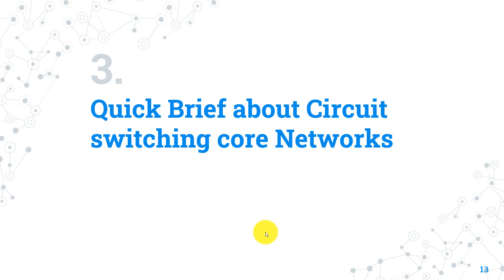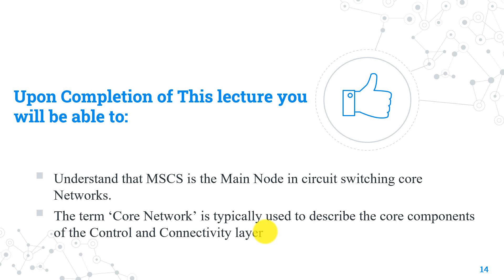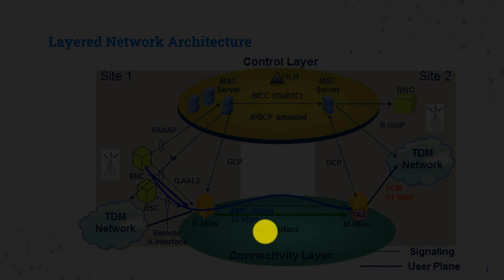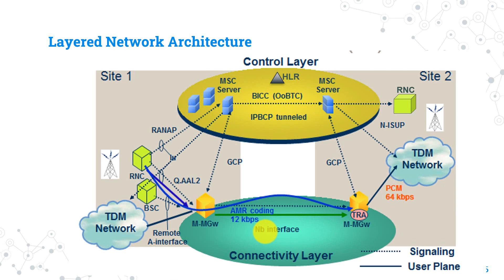Let's start our lecture with a quick brief about Circuit Switching Core Network. Upon completion of this lecture you will be able to understand that the MSC server is the main node in circuit switching core networks. The term core network is typically used to describe the core components of the control and connectivity layer. In general, the function of the core layer is to provide all the central processing and management for the system, and it is also the entity that interfaces to external networks, including the public phone network and other cellular telecommunications networks.